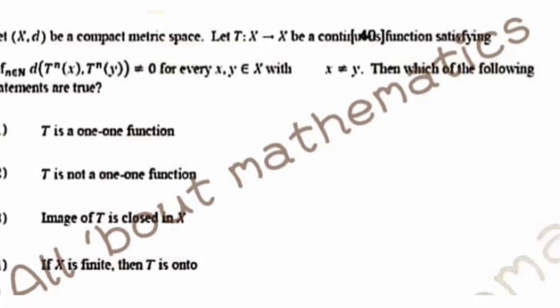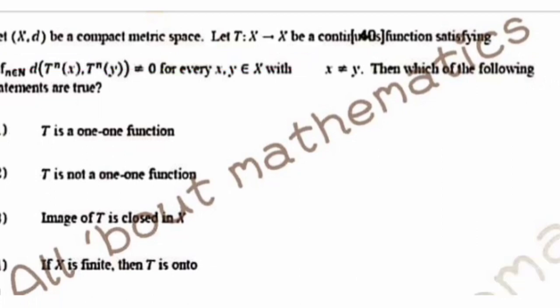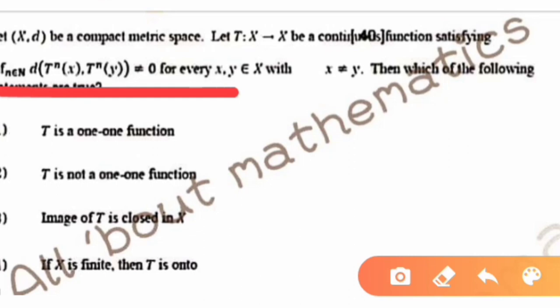This question is from Part C and is from metric spaces. In this question, let (X, d) be a compact metric space and let T: X → X be a continuous function satisfying the property: the infimum over n belonging to natural numbers of d(T^n(x), T^n(y)) equals zero, for every x, y belonging to X with x not equal to y.